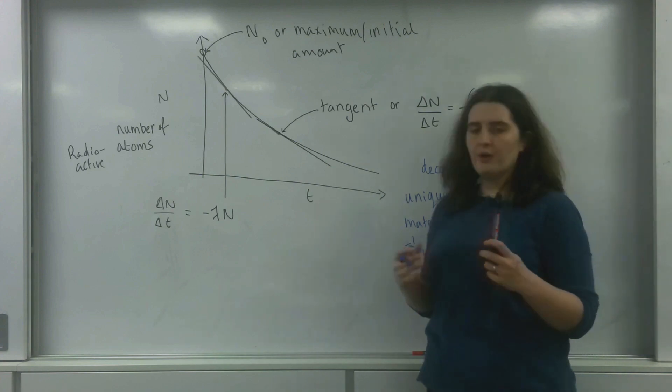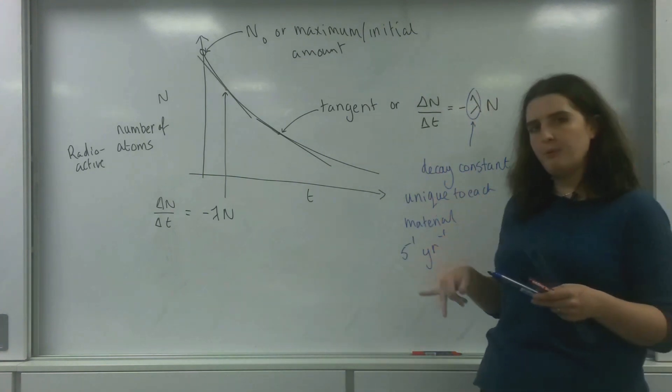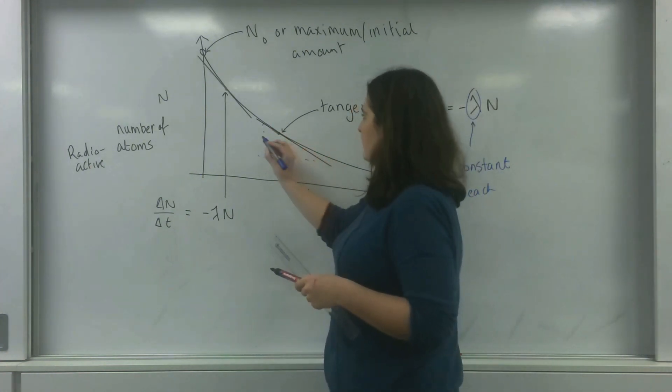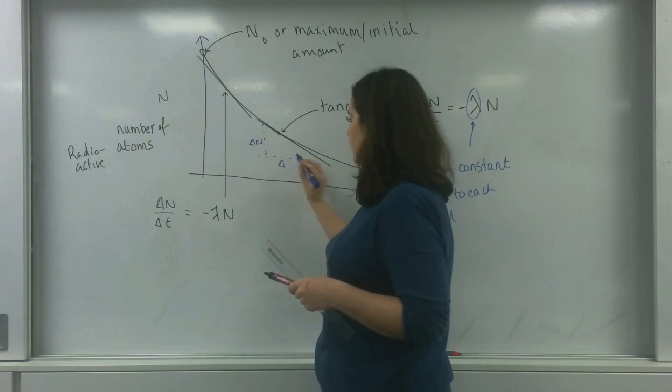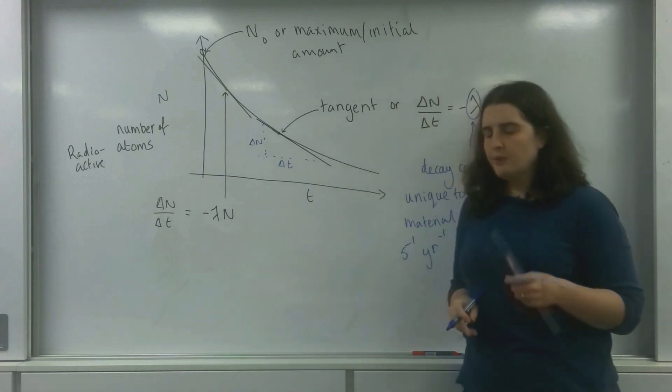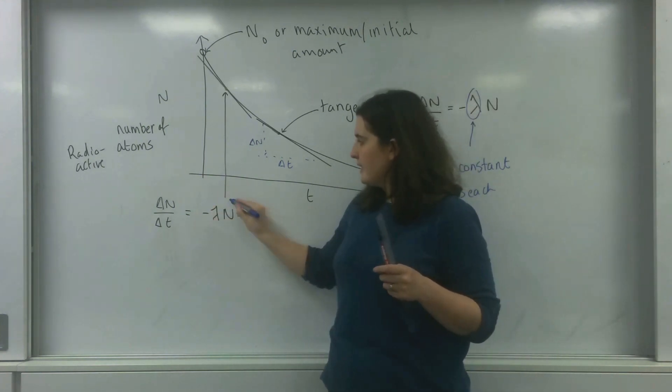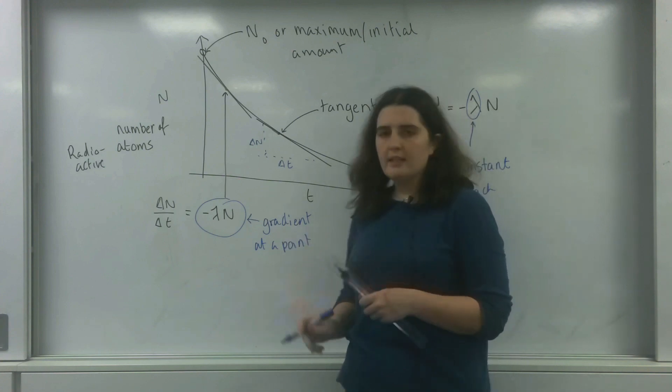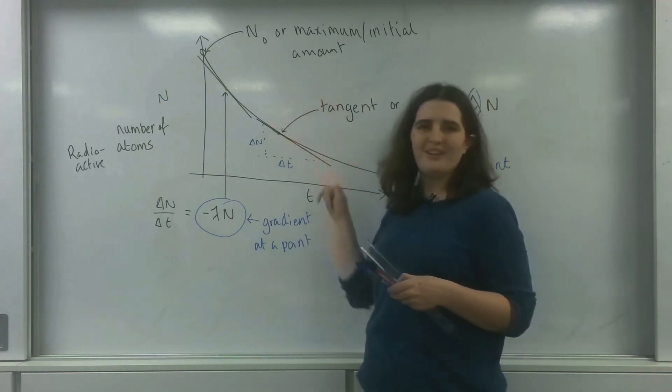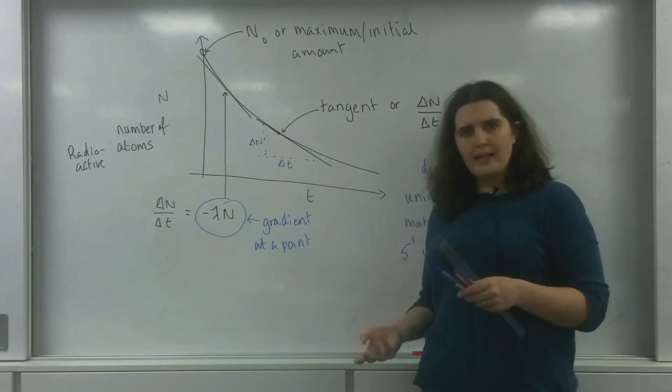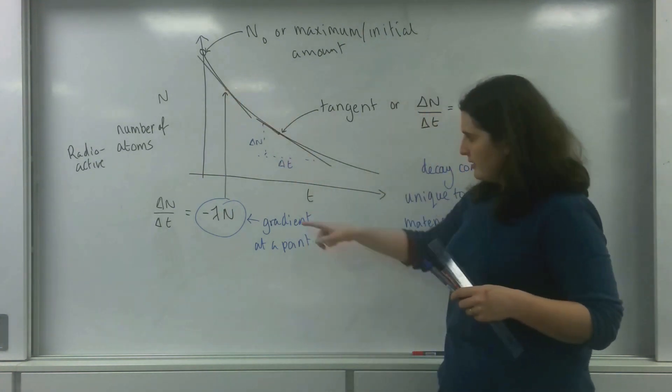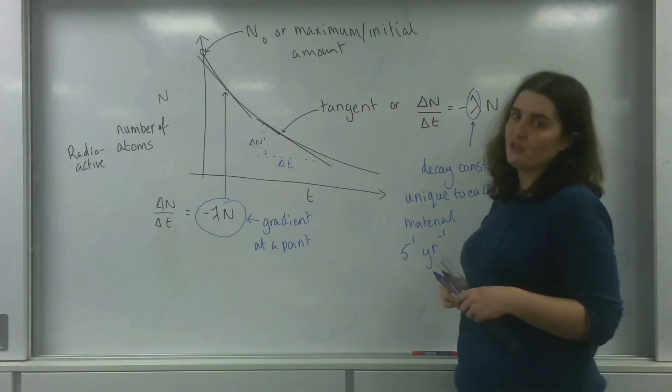So from a graph, if you took a gradient at any point, so if you took the gradient of this here, the change in n over the change in t, you would have a relationship of the gradient being this value here. It's very interesting that every single point along this, if you related that gradient to the number of particles, the value of n at that point, this value of lambda, this decay constant, remained the same.